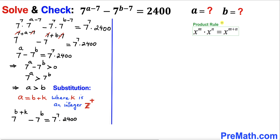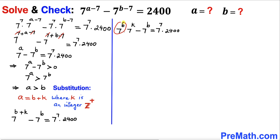Let's recall the product rule once again and apply it on the left hand side. We can write 7 power b times 7 power k, minus 7 power b, equals 7 power 7 times 2400. We can see that 7 power b is common on the left hand side, so we factor it out and we are left with 7 power b times (7 power k minus 1) equals 7 power 7 times 2400.